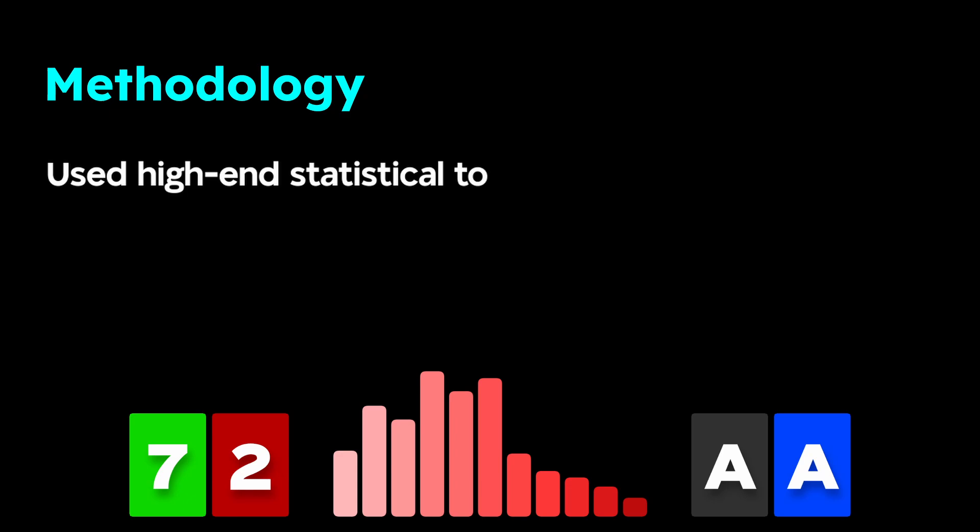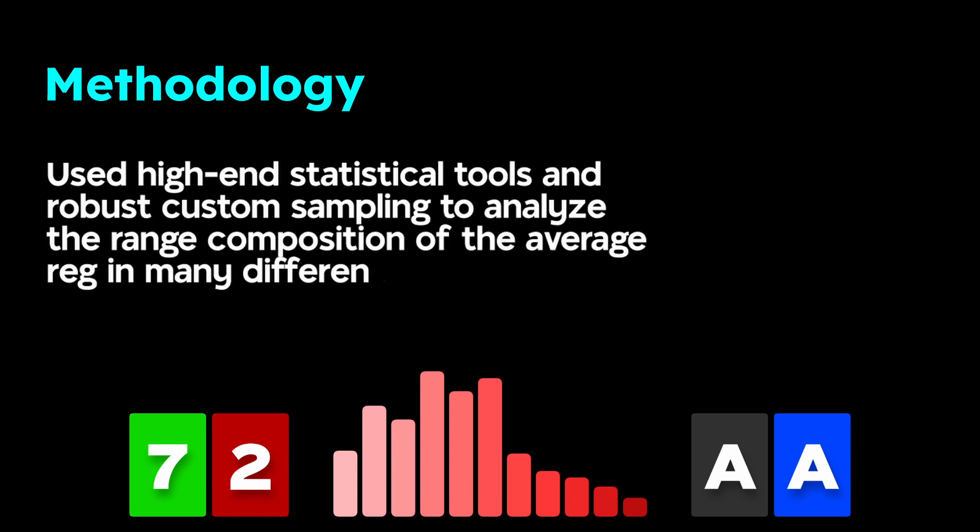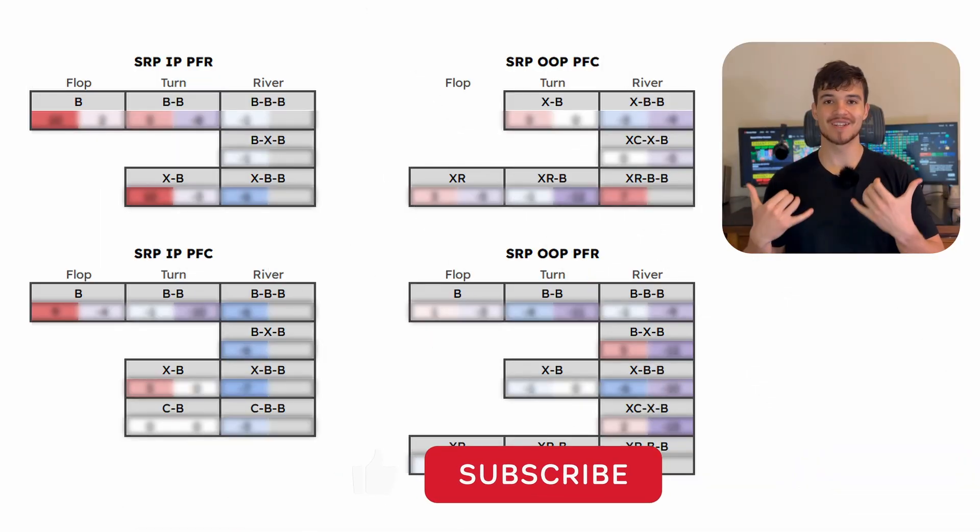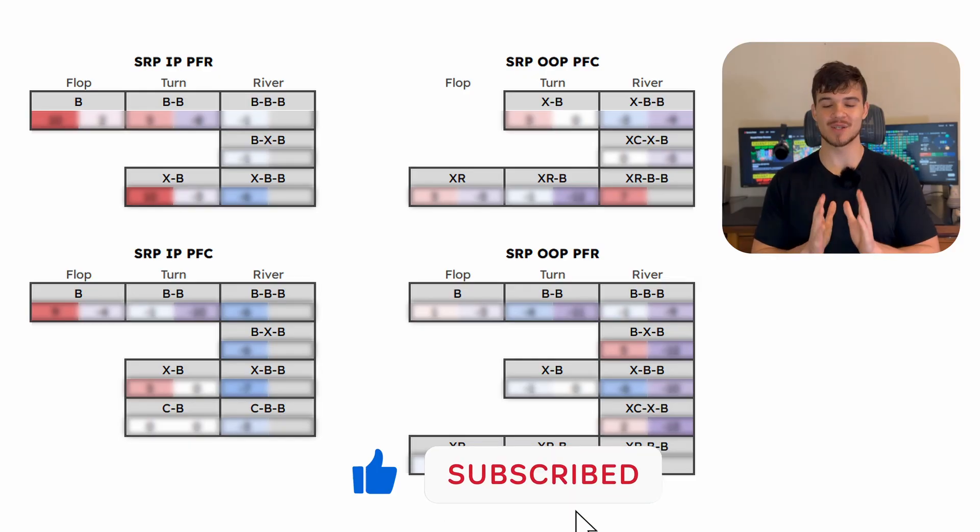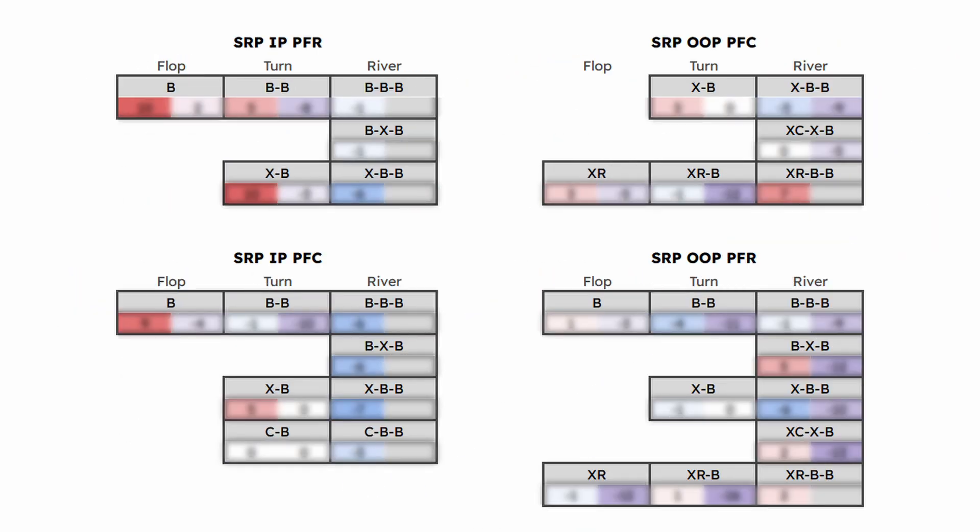But we're not going to stop there. Knowing that this error is massive is one thing, but I also want to show you exactly where people make it. To do this, we're going to zoom out for a second. Looking at a case study like a live play is very helpful, but I want to show you this pattern represented in poker players at large. I used a combination of high-end statistical tools and robust custom sampling to analyze the range composition of the average reg in many different common poker spots. And just for you, I created an Excel spreadsheet that neatly summarizes my findings.